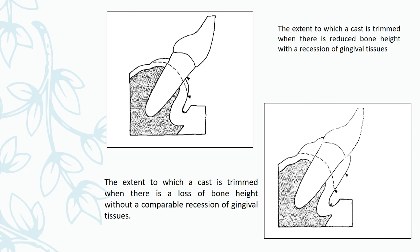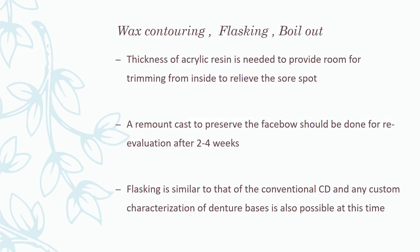The extent to which the cast is trimmed corresponds to the bone height with recession of the gingival. If there is recession, that indicates the bone height. If there is loss of bone height without recession — meaning the gums are recessed down and only the bone is recessed — there should be a pocket depth. This gives a guide for how far to trim the teeth in the cast to make it edentulous.